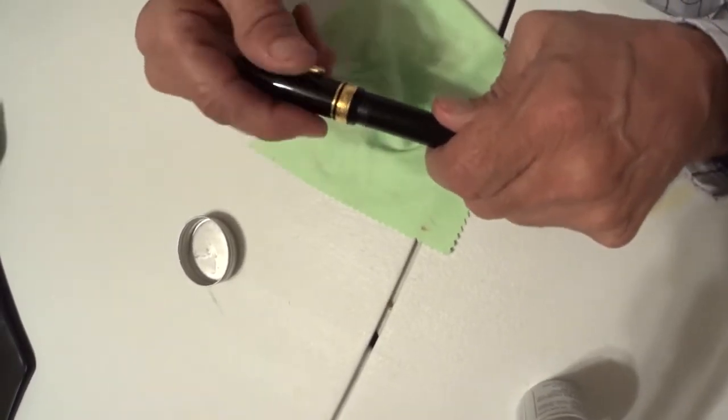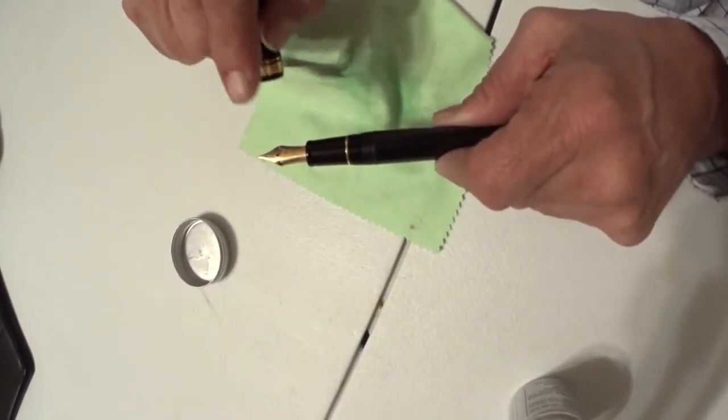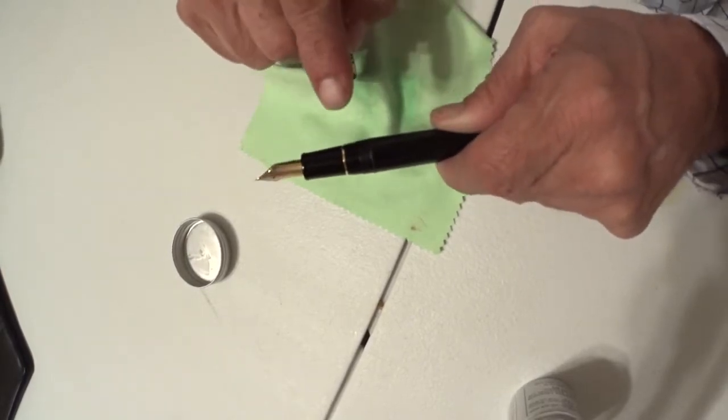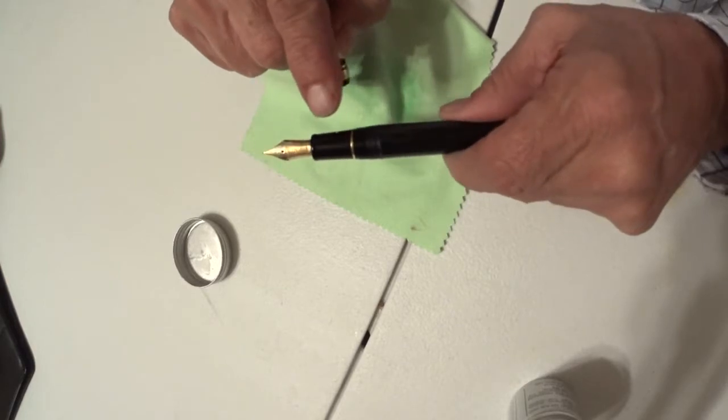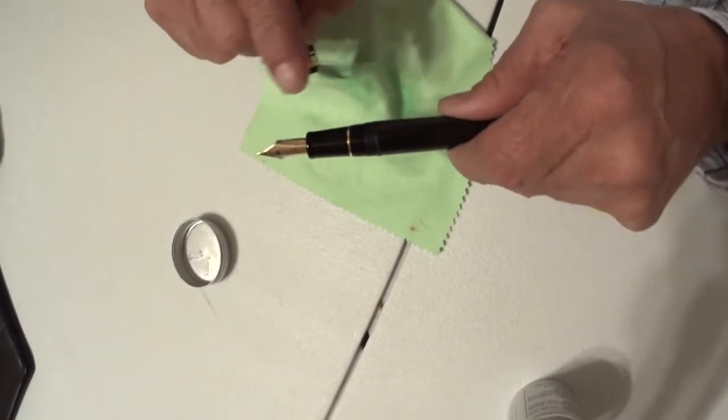And one thing you do not want to get it on your nib. Do not get it on your nib or feed. Stay away from there. Yes, you can do the grip. If you choose to, stay away from the nib or the feed. Because it could block it up.